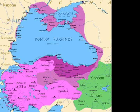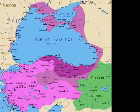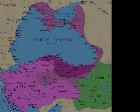The Dacians later enjoyed a resurgence in 85–86 AD under the rule of Decebalus, but were again eventually defeated in 106 AD by Emperor Trajan, who then turned a large portion of Dacia into a Roman province — Roman Dacia.